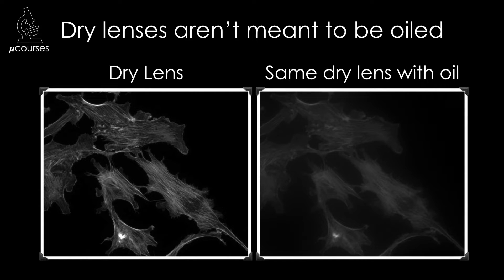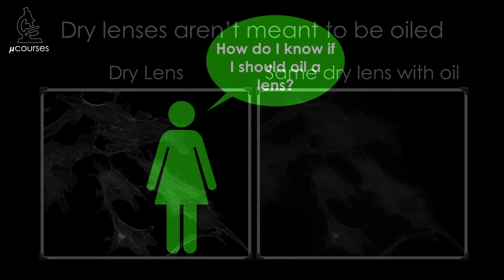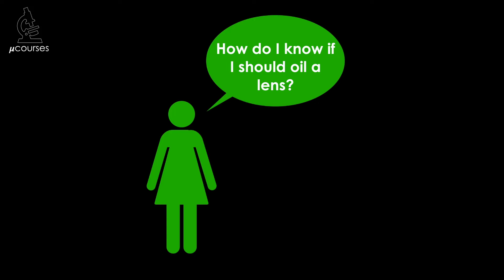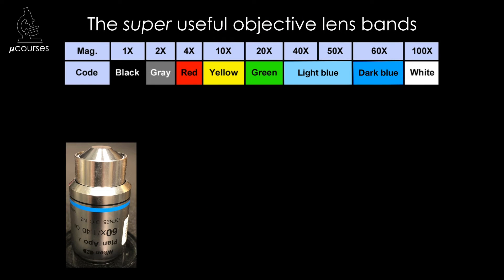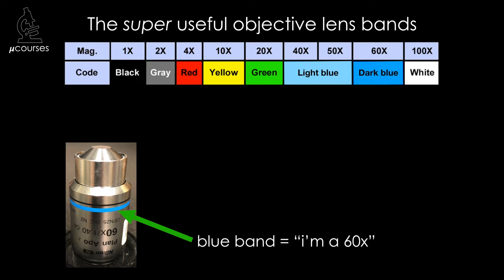Image quality will suffer greatly if there's any immersion oil on a dry lens. So you might be wondering, how do I know if I should oil a lens or not? There's actually a really useful banding system that all of the major microscope manufacturers use on their objective lenses. An objective lens is marked with a thicker band that tells you what magnification it is — a dark blue band, for example, tells you that this is a 60x objective.